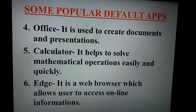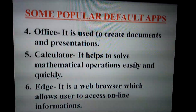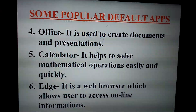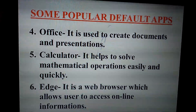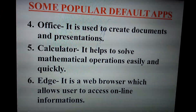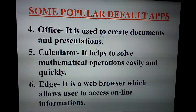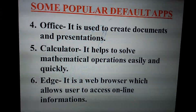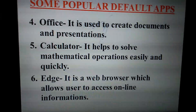Another set of popular default apps: Office — it is used to create documents and presentations. Calculator — it helps to solve mathematical operations easily and quickly. Edge — it is a web browser which allows the user to access online information. In Windows 10, if you want to access online information, go to Settings, click Default Apps, and then click on Edge.